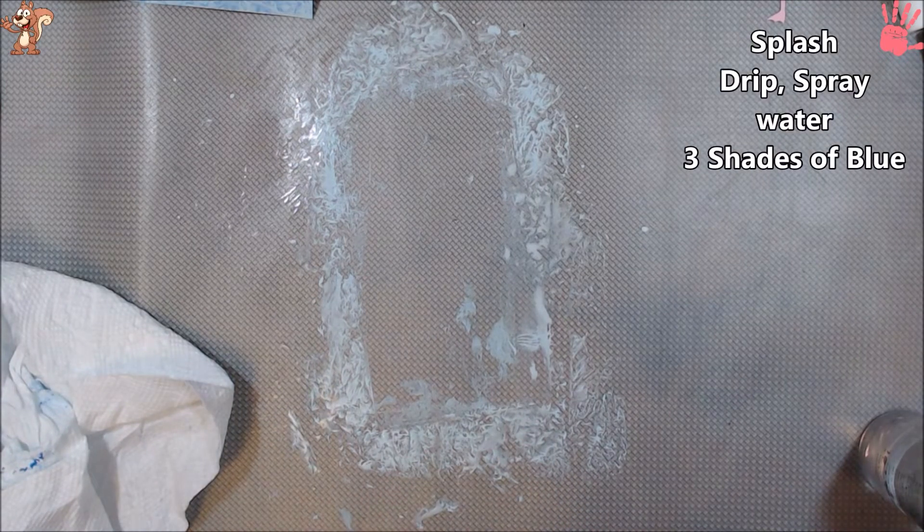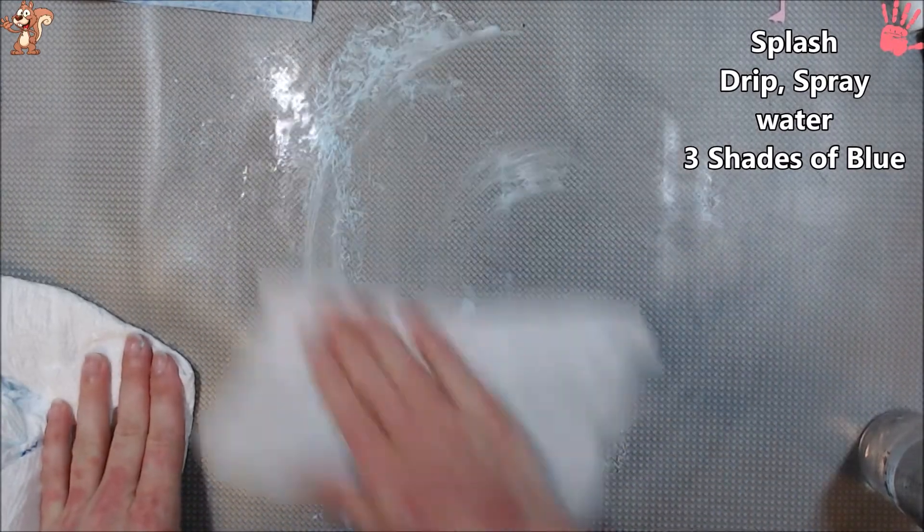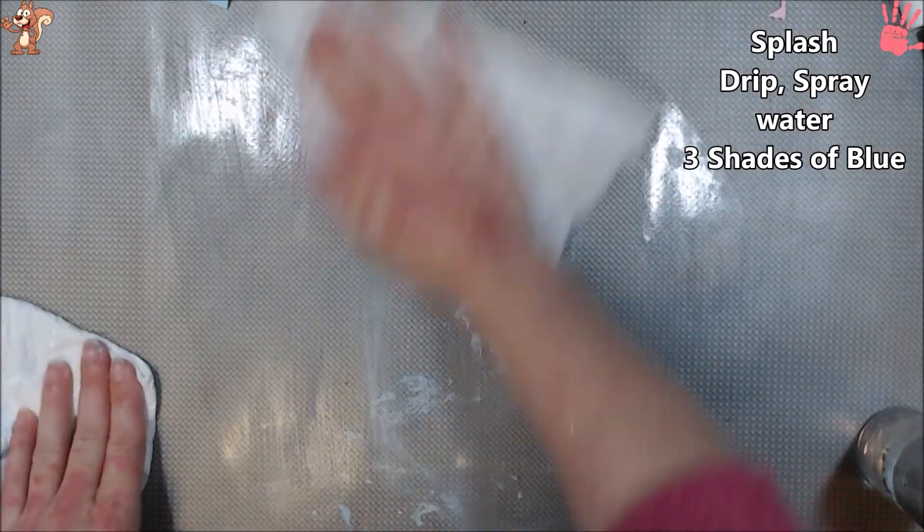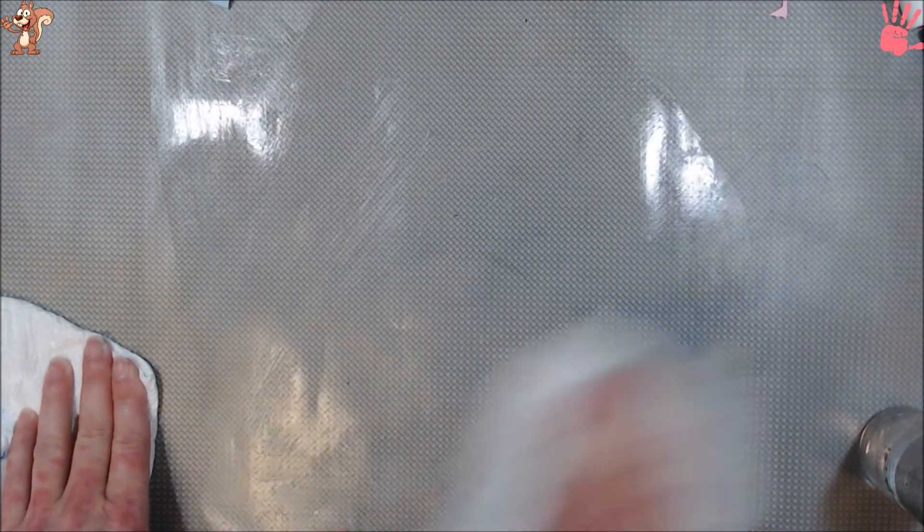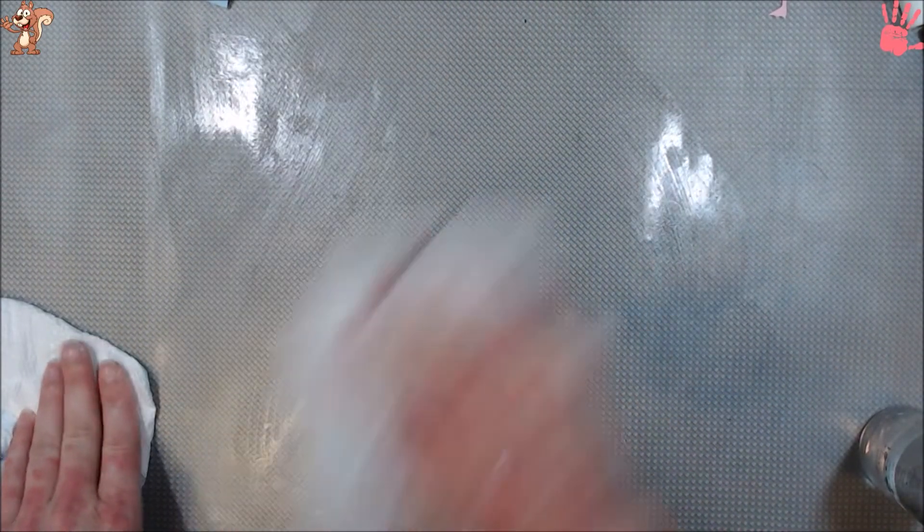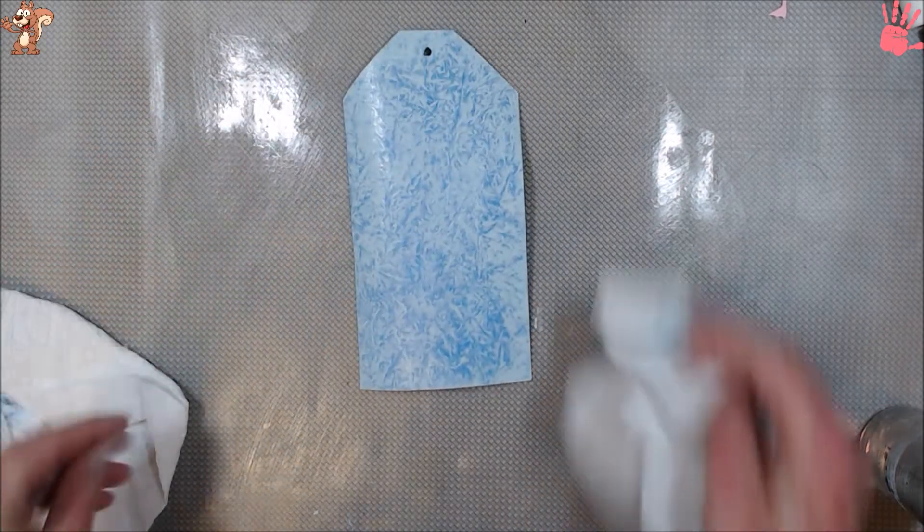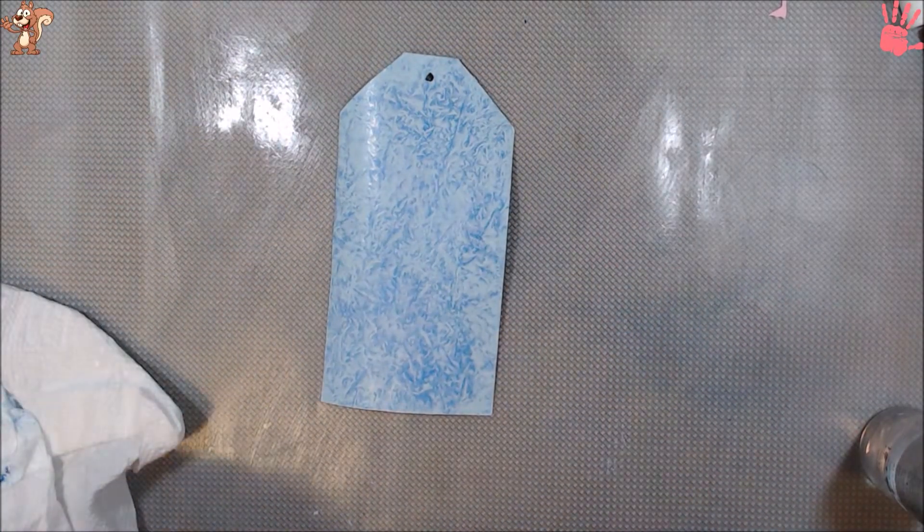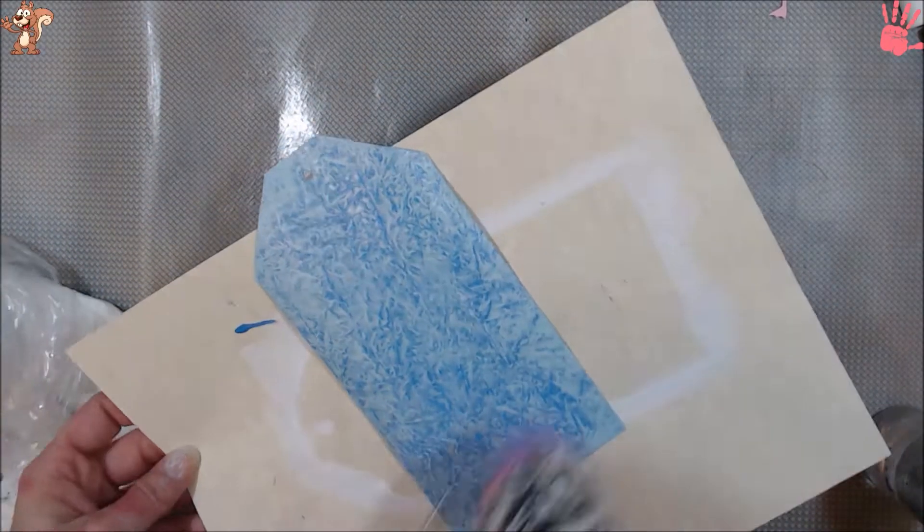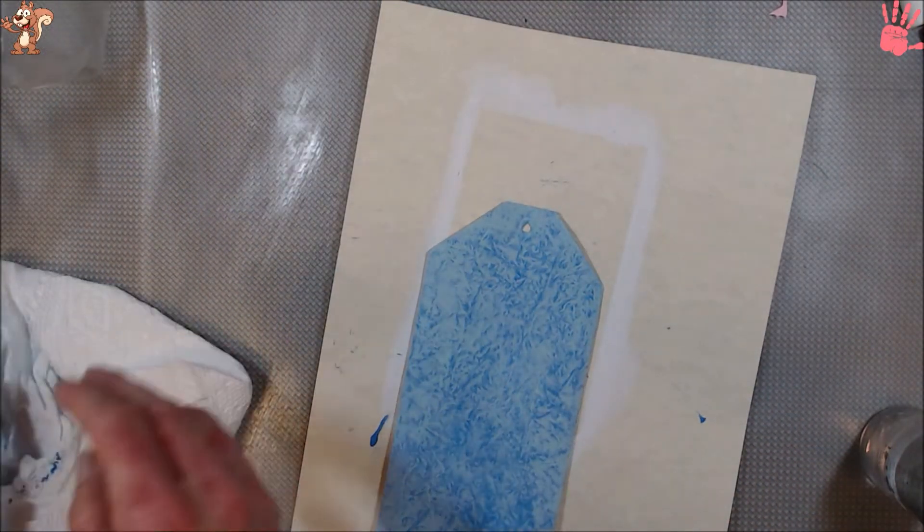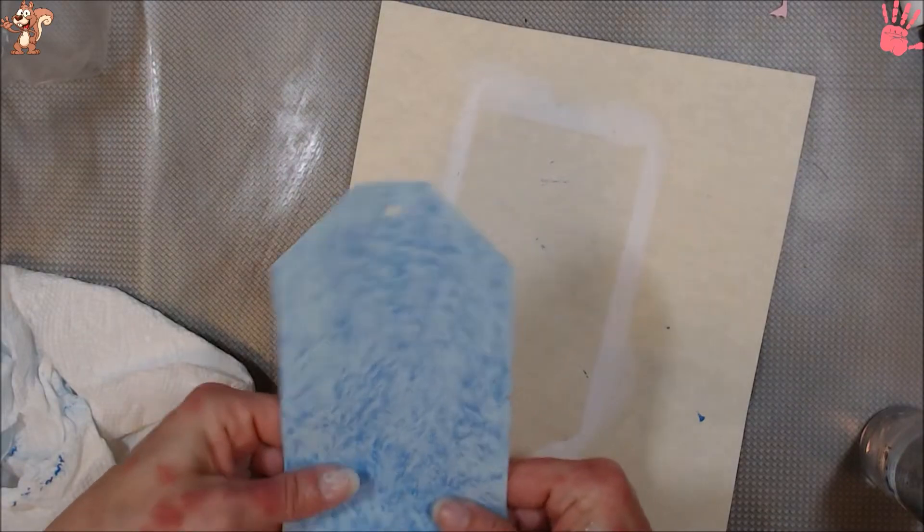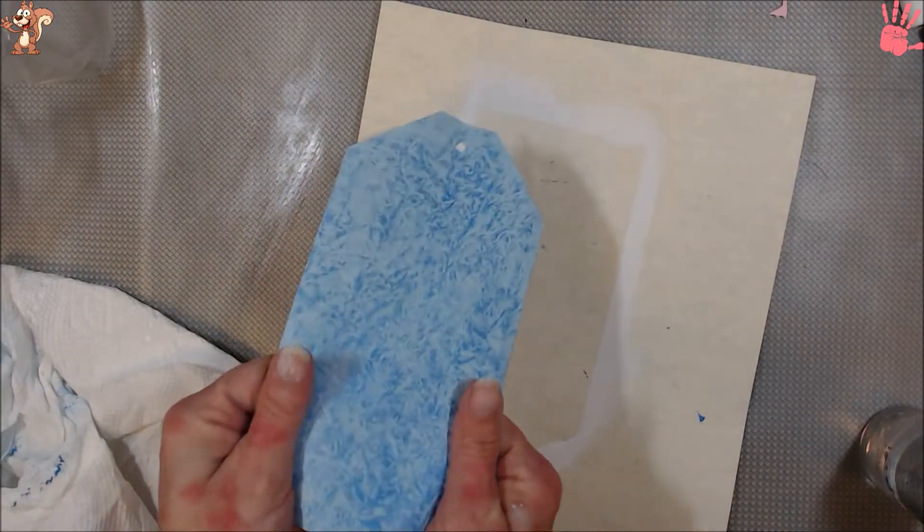Pull that up. And crunch it up some more. Take some of this off. I just want a little bit of that under color to show. So I have my three shades of blue. Set that aside. Wipe this up. Go rinse this off really quick and I'll be right back. I'm going to dry this really quick. I'm going to flatten it out.